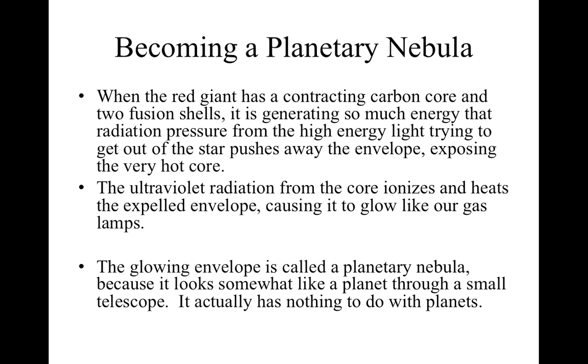When the red giant has a contracting carbon core and two fusion shells, it's generating so much energy that radiation pressure, that is, the pressure of the photons on the gas, from the high-energy light trying to get out of the star, pushes away the envelope, exposing the very hot star. This ultraviolet light also heats up and ionizes the expelled envelope, causing it to glow like the gas in our discharge lamps. This glowing envelope is what we call a planetary nebula, because it looks somewhat like a planet through a small telescope. It actually has nothing to do with planets.